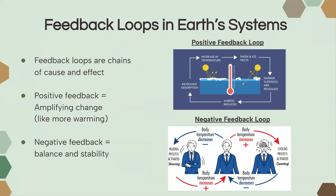So feedback loops are chains of cause and effect, and there are two types. The first is a positive feedback loop — this is when one change happens to an Earth's system and it can cause a series of other changes to other Earth's systems that worsen the original condition. We also have a negative feedback loop, which is the opposite — one change to the Earth's system causes changes that bring the systems back to balance the original condition. Remember, positive feedback loops are when the original situation is worsening or the change is amplifying.